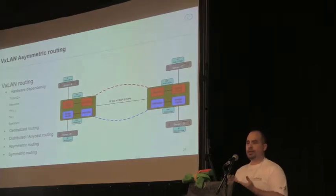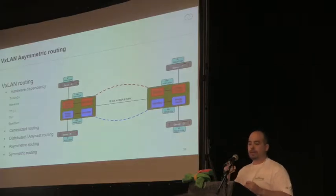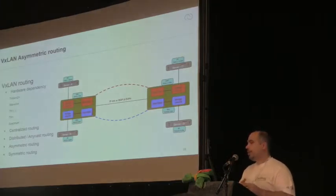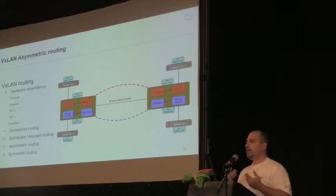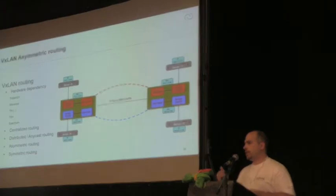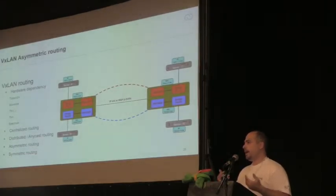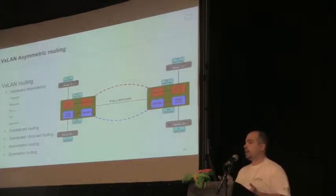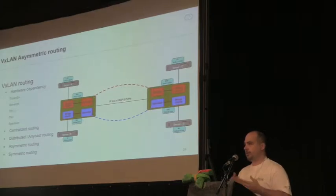One of the issues is how to do layer 3 routing. There is asymmetric and symmetric routing. With asymmetric routing, when routing to a different subnet, you need to configure the VNI everywhere because it could be that a destination needs to be reached. It encapsulates the original IP packet and sends it to the destination where it only has to be decapsulated — no secondary IP lookup.